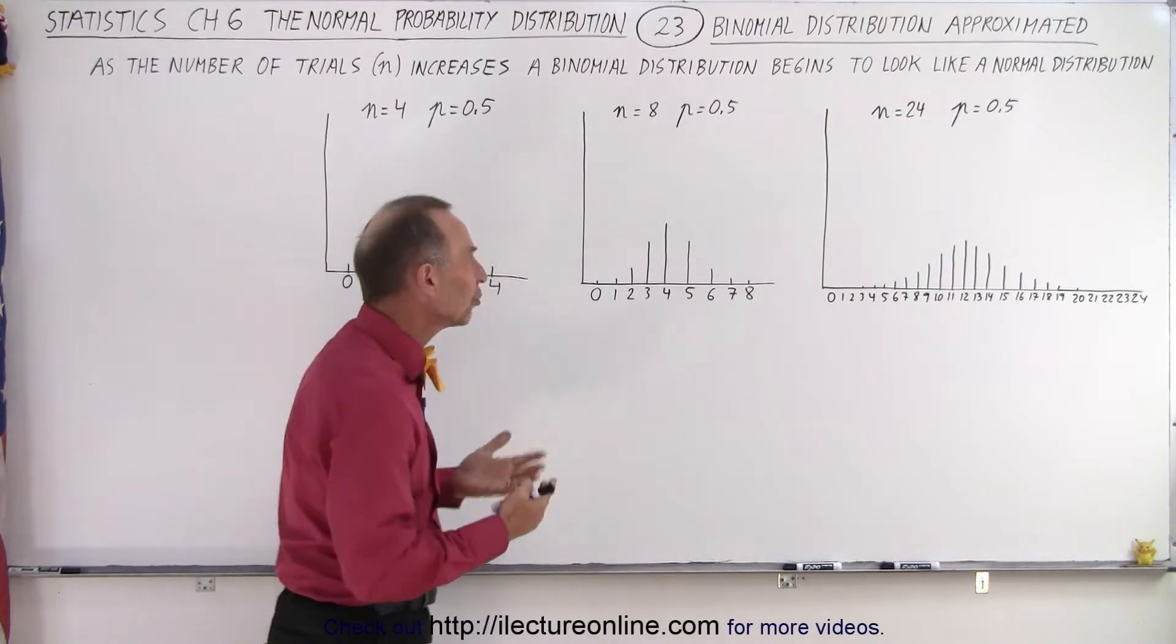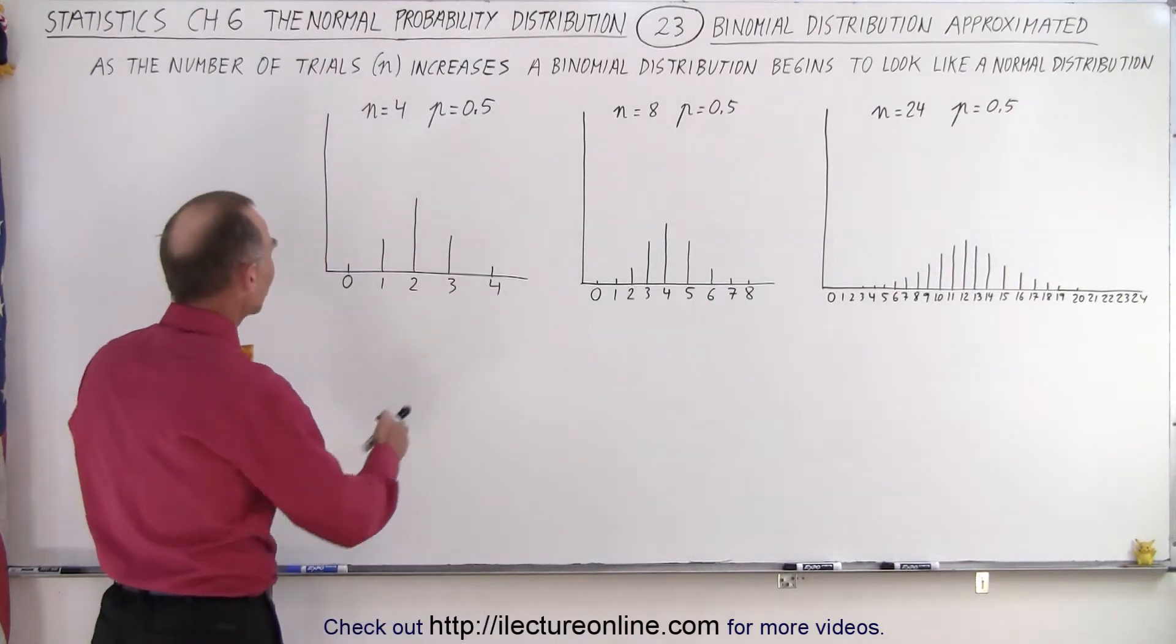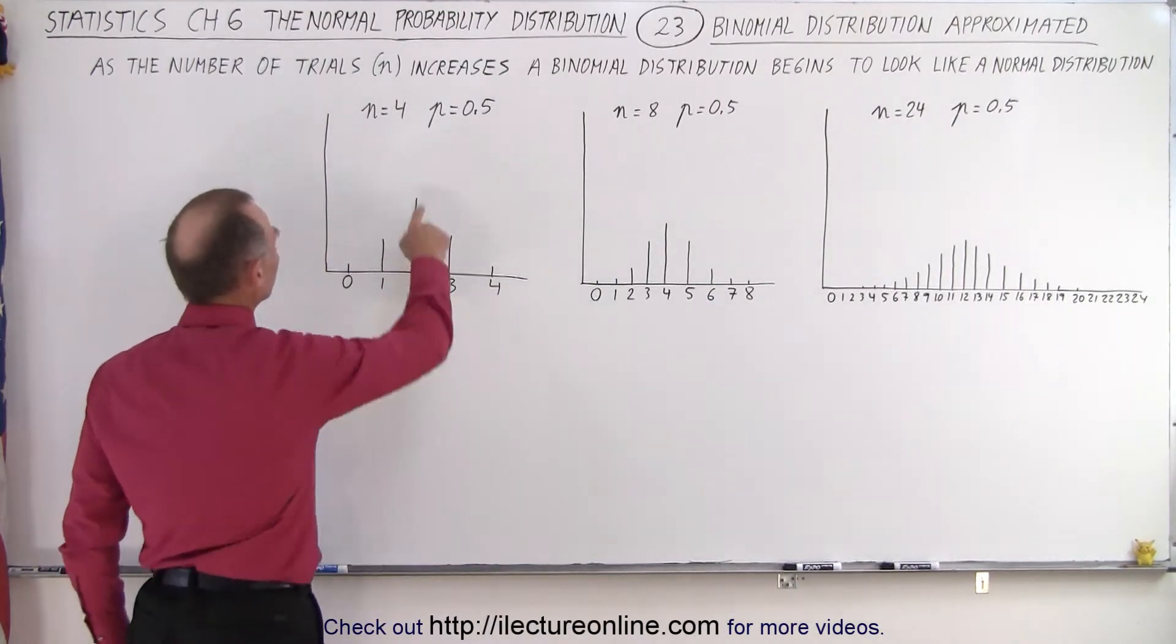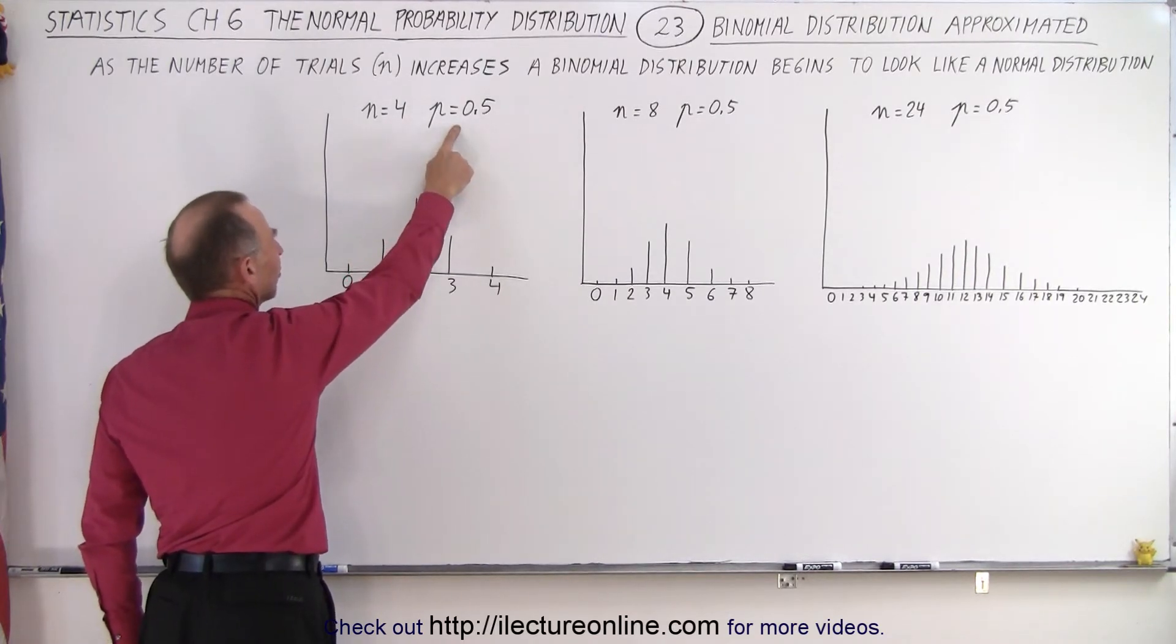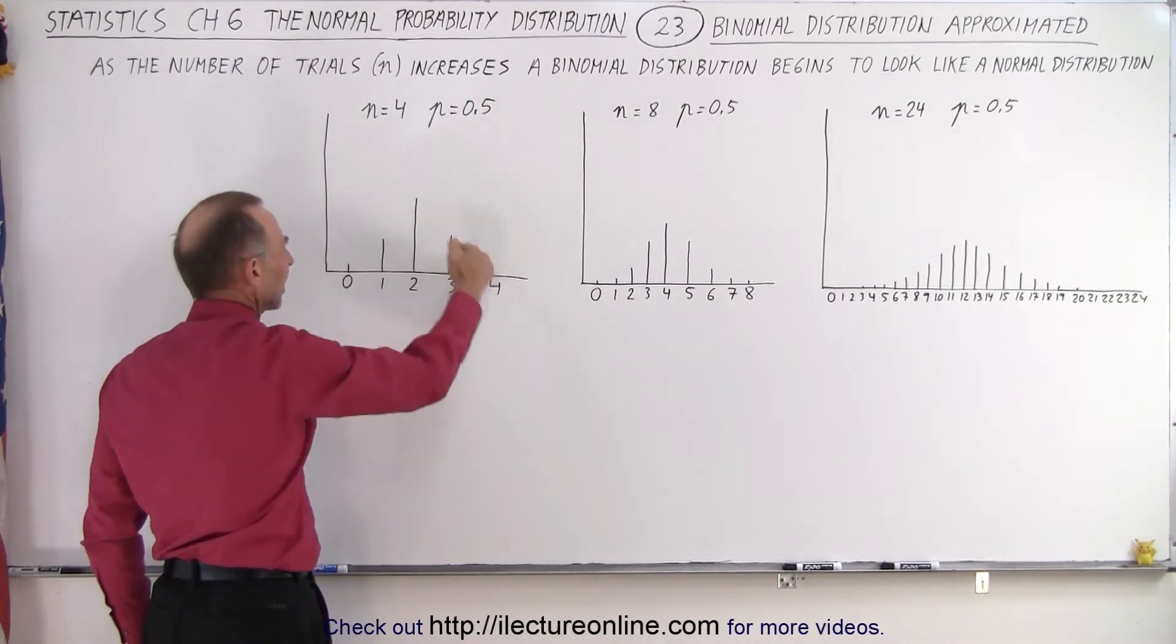So let's take a look at these three graphs. Here we have a binomial distribution where the number of trials n equals 4, with the probability of success 0.5. It kind of looks triangular in shape.